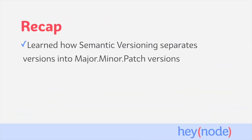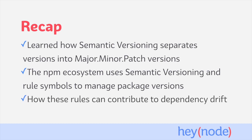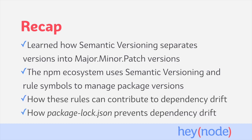To recap, in this tutorial we learned how semantic versioning separates versions into major, minor, and patch versions. We learned about how semantic versioning and rule symbols help manage package versions in the npm ecosystem, how these version rules can contribute to dependency drift, and how to prevent dependency drift by using a package-lock.json file.